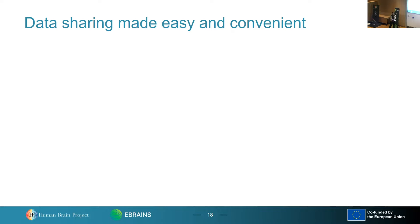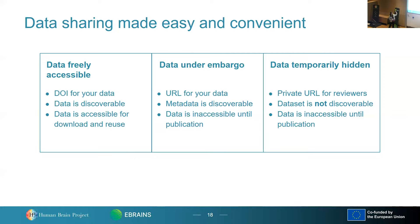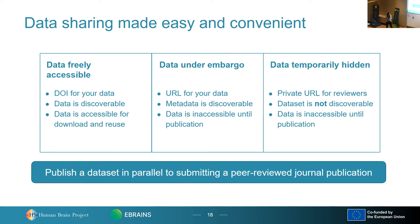You're all junior researchers, and sometimes it's a bit scary to start sharing data — especially because you're afraid of being scooped and afraid of making everything openly available. Within eBrains, we have three options for sharing data before your article is published. Going from most visible to least visible: you can make your data freely accessible, which is similar to when you've already published your paper — typically done when you have published a preprint. You can also release your data under embargo, where the metadata will be visible but the data is still inaccessible. Or you can temporarily hide your data but give access to a reviewer, which will speed up the peer review process and be beneficial to publishing a paper.